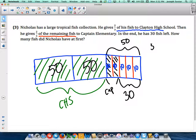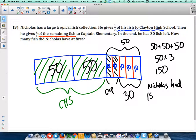we can do 50 plus 50 plus 50 or 50 times 3 and we get 150. And of course we answer with an answer statement: Nicholas had 150 fish at first.